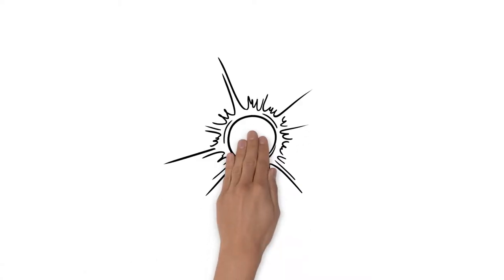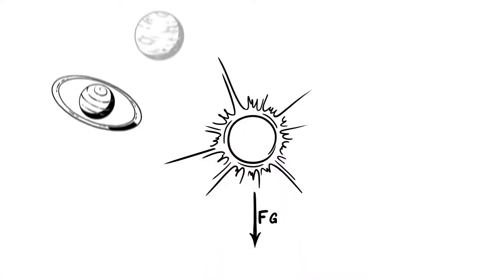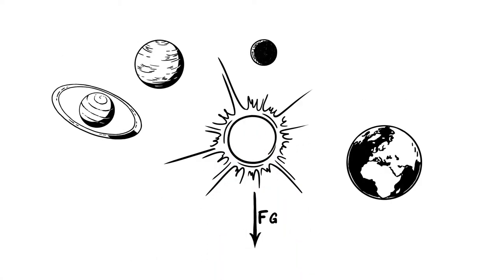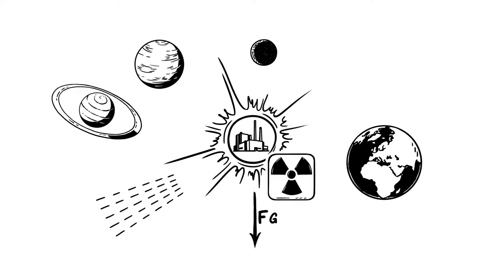But the Sun is not only the gravitational center of our solar system, it is also a source of energy. Fueled by nuclear fission, the Sun emits light and a steady stream of particles, the solar wind.